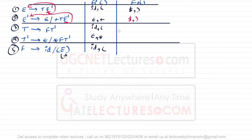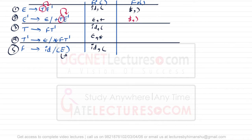To find the FOLLOW of T, check the right-hand sides of all productions for locations where T appears. T appears in two locations, and after each T we have E'. So whatever is in FIRST of E' will be in FOLLOW of T. FIRST of E' contains epsilon and plus. The plus goes into FOLLOW of T without issue.